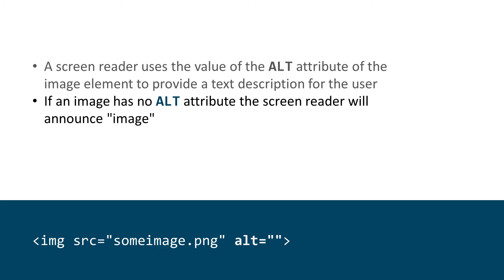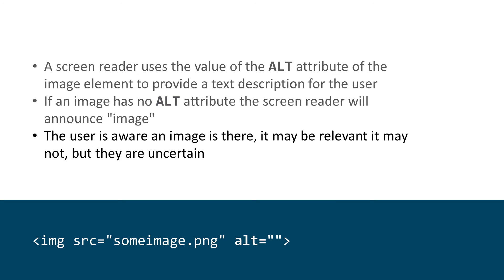If an image has no alt attribute, the screen reader will announce 'image.' So the user is aware an image is there — it may be relevant, it may not — but they are uncertain. The alt attribute is the way to provide a text description, or conversely, to indicate to the screen reader that the image serves no purpose other than being decorative and can be ignored.